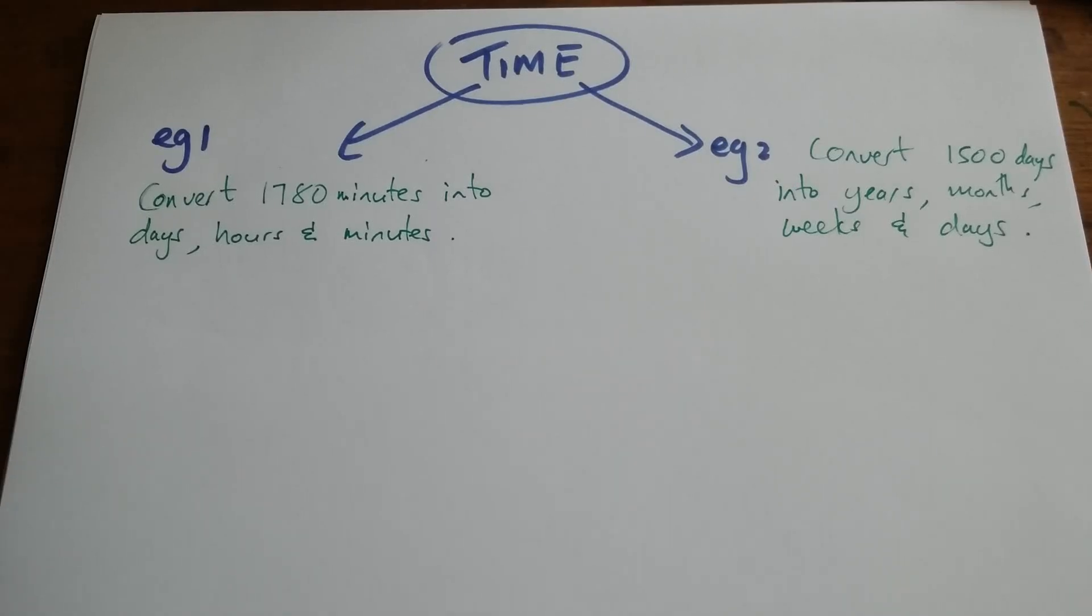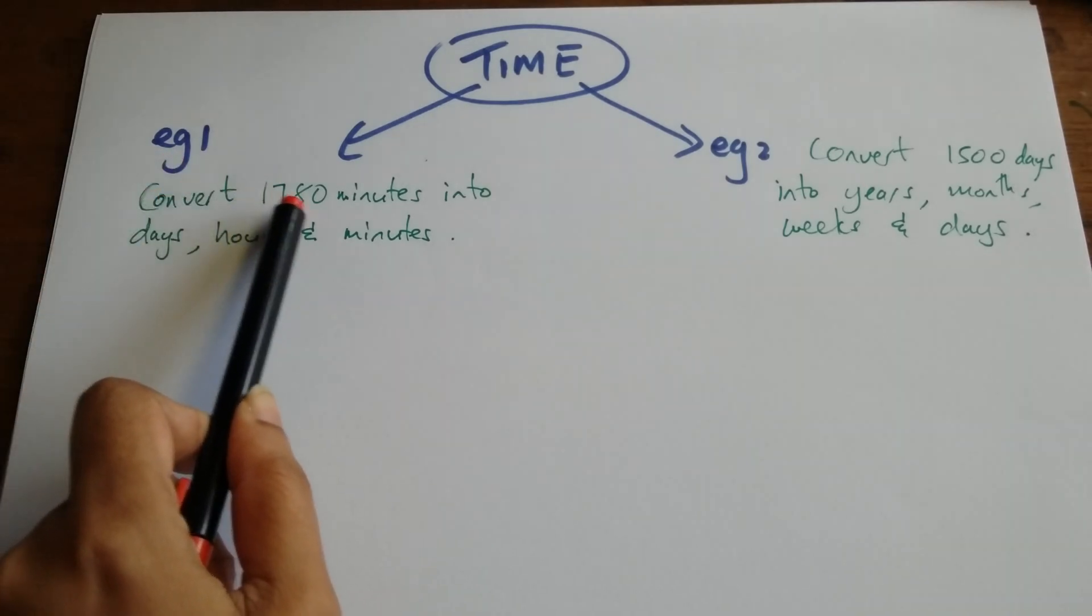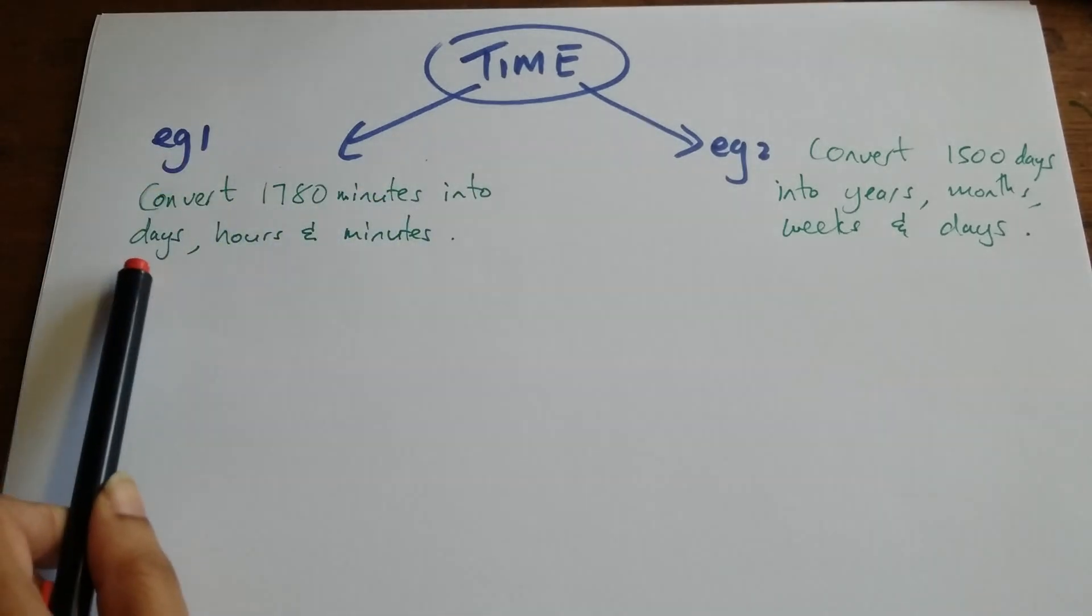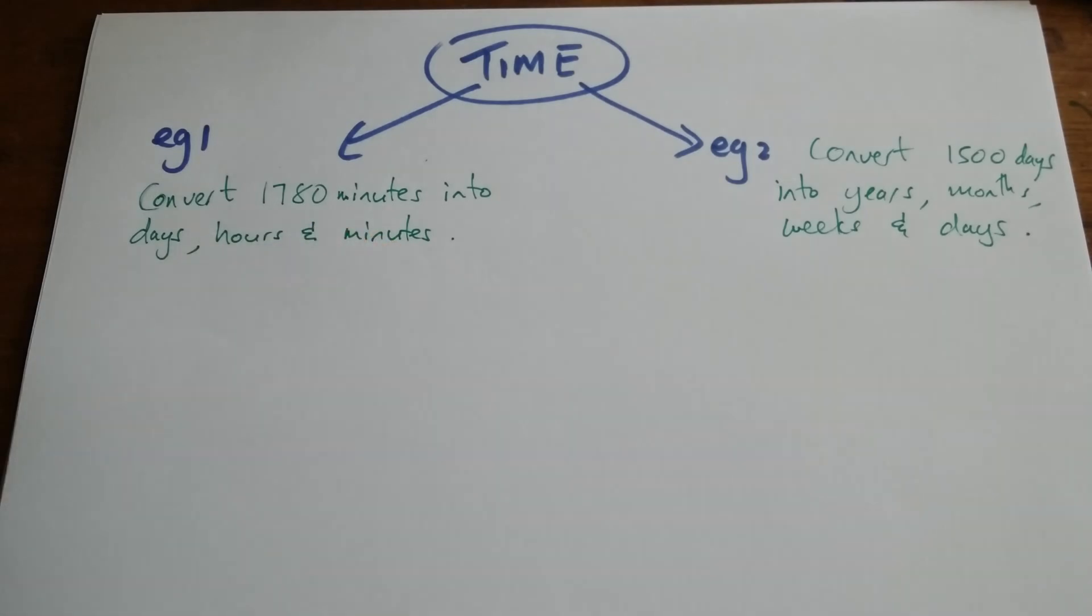We're going to continue with conversions involving time. Let's look at example 1. It says convert 1780 minutes into days, hours and minutes.